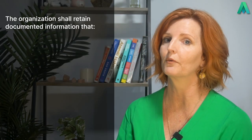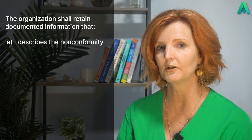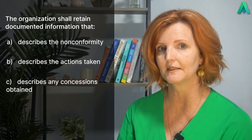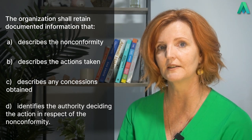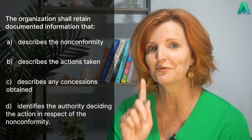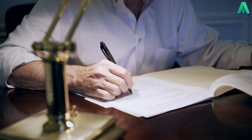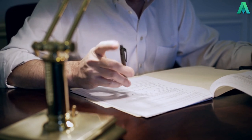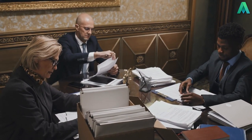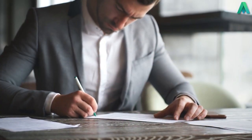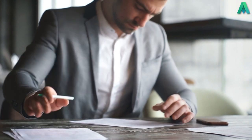We then move on to the second subclause, 8.7.2, where it states that the organisation shall retain documented information that: A describes the non-conformity, B describes the actions taken, C describes any concessions obtained, and D identifies the authority deciding the action in respect of the non-conformity. We need to retain some evidence of any non-conformities that are identified. This is normally maintained in a non-conformance register or improvement register — you can call it what you want. This register should include what the non-conformity was, what actions were taken — from correction, segregation, informing the customer, or acceptance under concession — and who has authorised the final action. If you maintain a register, this is perfectly fine to meet this documented information requirement.